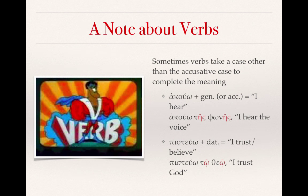Some brief notes on verbs: verbs may take a case other than the accusative to complete their meaning. For example, the verb akuo ('I hear') takes either the genitive or the accusative. So 'akuo tes phones' means 'I hear the voice,' with 'voice' in the genitive case rather than the accusative. Another example is pistiuo ('I trust' or 'I believe'), which takes the dative case for its object, as in 'pistiuo to theo' meaning 'I trust God.'